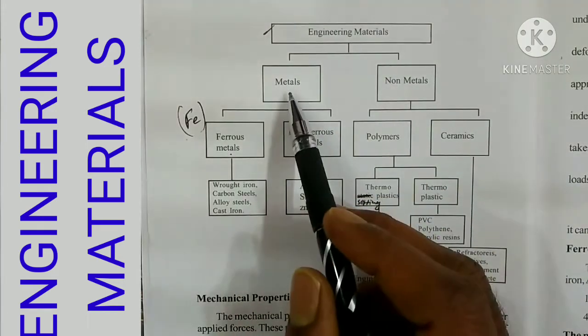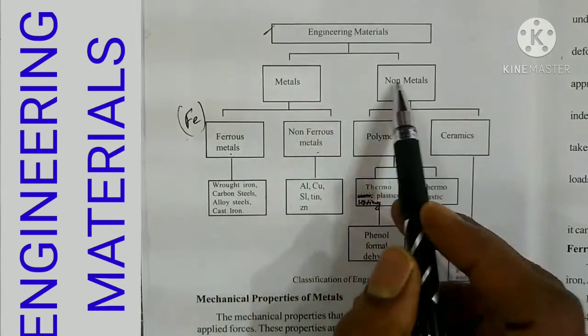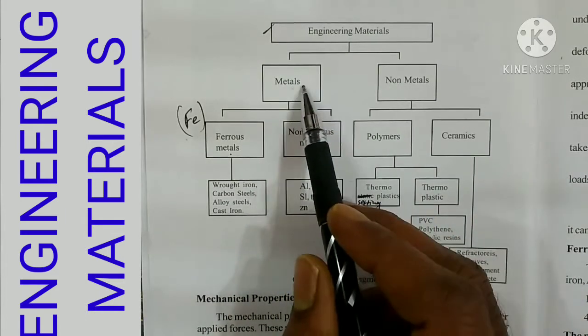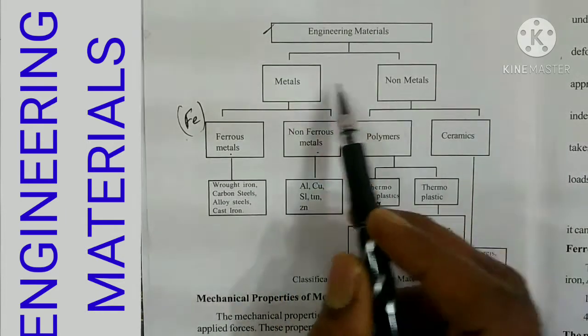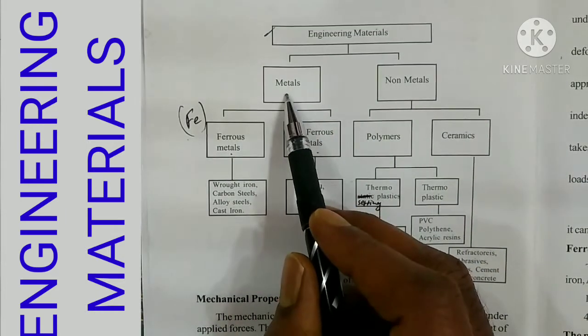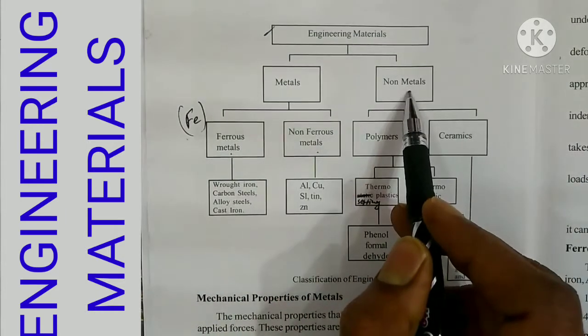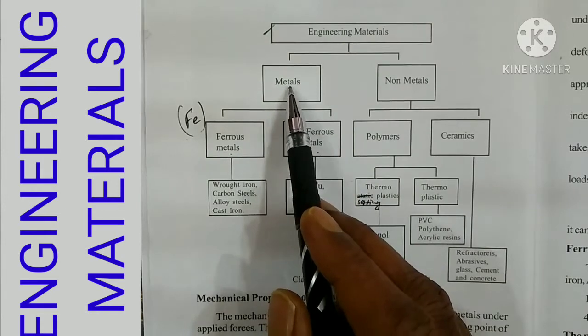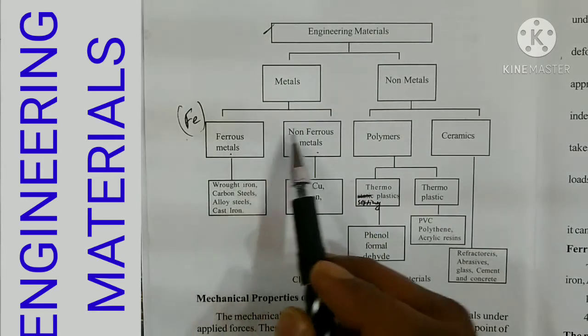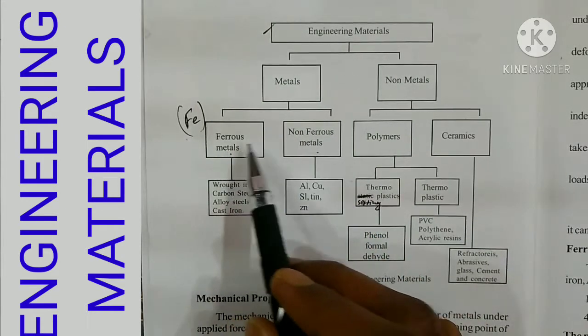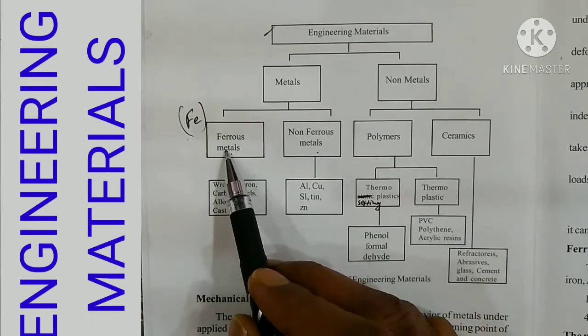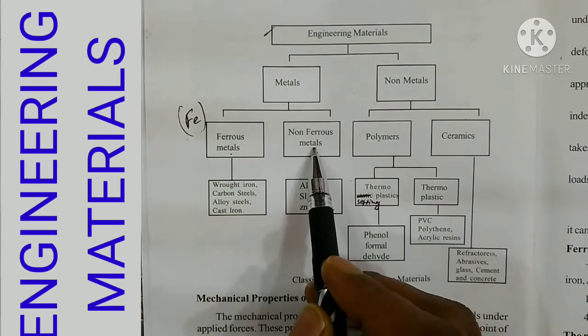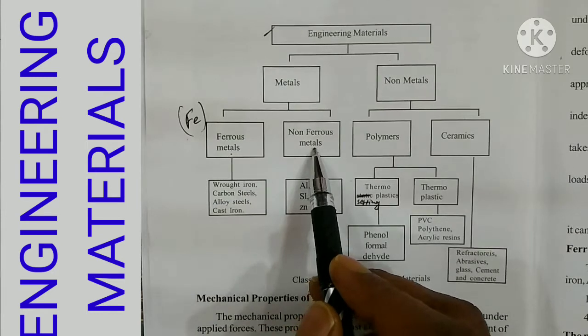We use engineering materials in two categories: one is metals, and two is non-metals. Metals are further divided into ferrous metals and non-ferrous metals.